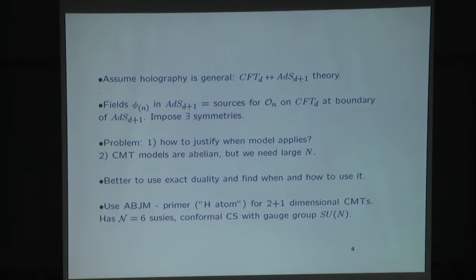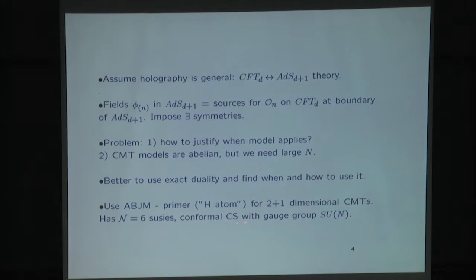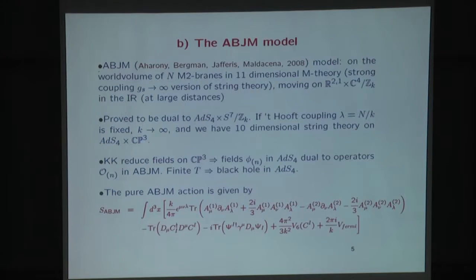I will concentrate in two plus one dimensions, where the primer — the hydrogen atom, the simplest thing you can think of — is this model called the ABJM model, which has six supersymmetries. It's conformal with a gauge group U(N) cross U(N), and it's of the Chern-Simons type.